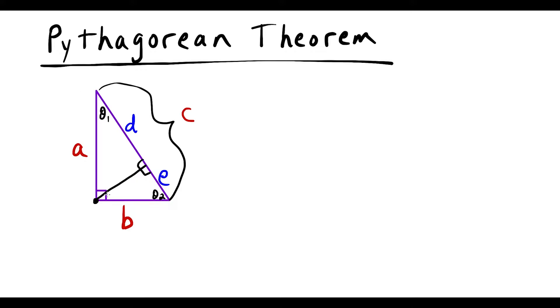Notice in the big triangle we have 90 plus theta 1 plus theta 2 is going to equal 180 degrees. So if we look at this medium-sized triangle right now we have 90, theta 1, this would have to be theta 2. And then in the small right triangle we have 90, theta 2, this would have to be theta 1.